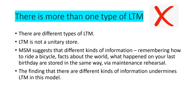A further limitation is that the multi-store model treats long-term memory as a unitary store, but Tulving identified three distinct types: semantic, episodic and procedural. Information such as how to ride a bicycle, facts about the world, and memories of your last birthday are all very different, yet the multi-store model suggests they are all stored in the same way via maintenance rehearsal. The existence of different kinds of long-term memory undermines the model.